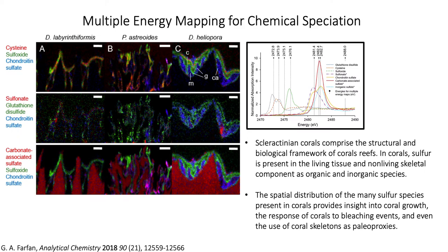As a second example of multi-energy mapping, these authors used sulfur multi-energy mapping to examine sulfur speciation in scleractinian corals, which form the structural and biological framework of coral reefs. In coral, sulfur is present in both the living tissue and the non-living skeletal component as organic and inorganic species. They mapped the distribution of organics like glutathione disulfide and compared it to inorganic species like sulfonate. The spatial distribution of these sulfur species provides insight into coral growth, the response of corals to bleaching events, and the use of coral skeletons as paleoproxies.